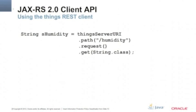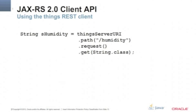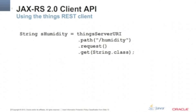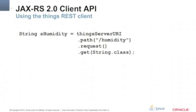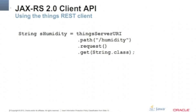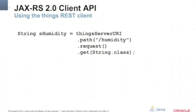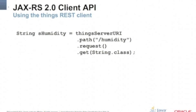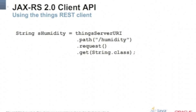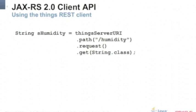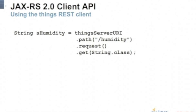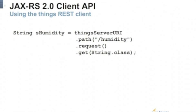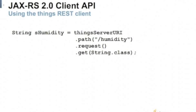So how do you get the humidity, for example? You just tell the Things Server URI to go to the path slash humidity, create a request, and call the GET HTTP command. Convert whatever you get to a string object — this string is the humidity information from the Raspberry Pi that was collected from the Arduino board. It's pretty easy to connect to the REST services using the new JAX-RS Client API.